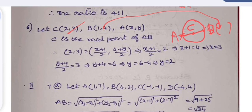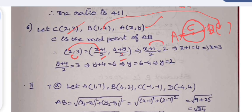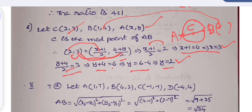Since C is the midpoint of AB, we use the midpoint formula. Let A = (x, y). Then ((x + 1)/2, (y + 4)/2) = (2, 3). Equating x-coordinates: (x + 1)/2 = 2, so x = 3. Equating y-coordinates: (y + 4)/2 = 3, so y + 4 = 6, giving y = 2. Therefore point A is (3, 2).